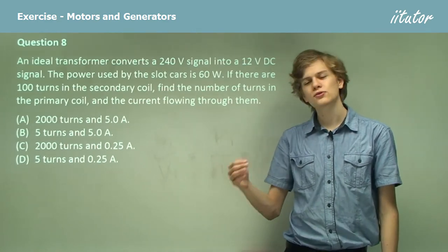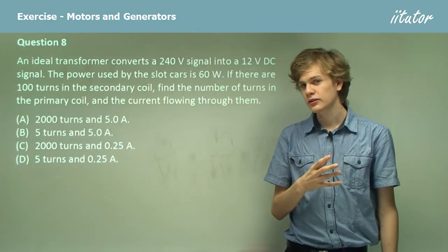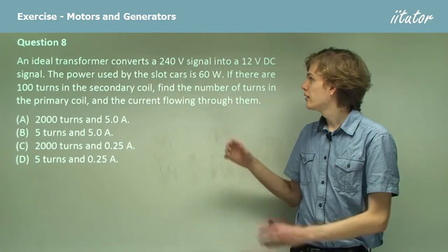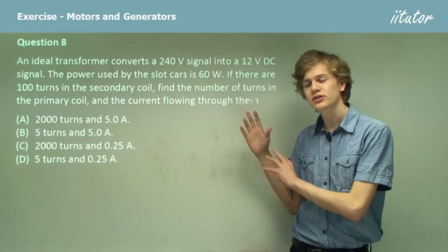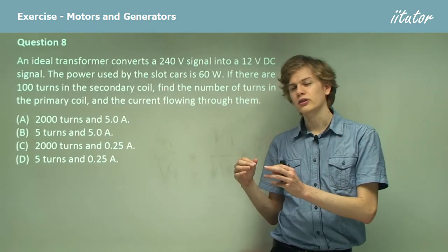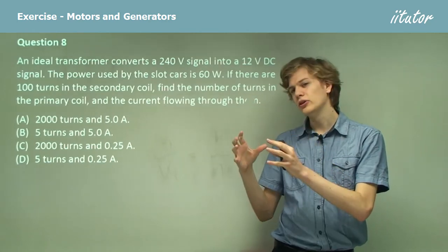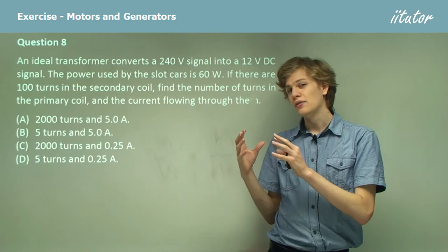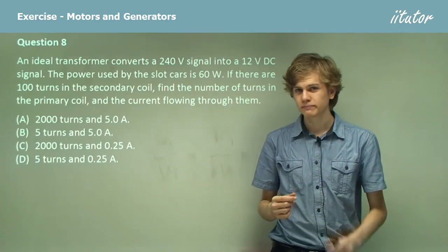Now if we have a high voltage being transformed into a low voltage, but the power, 60 watts, stays the same, that means that the low voltage will need a high current and the high voltage will need a low current.